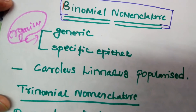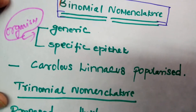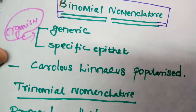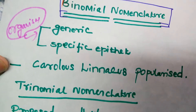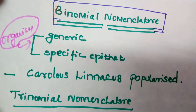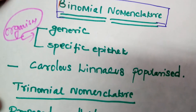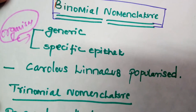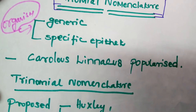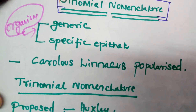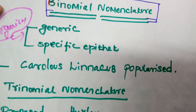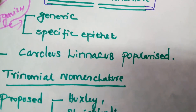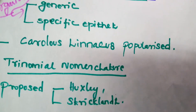When an organism is named, it is given two names: one is the generic name and the other is the specific epithet. This makes it easy to identify each and every organism. It is accepted all over the world. Carolus Linnaeus popularized this system.